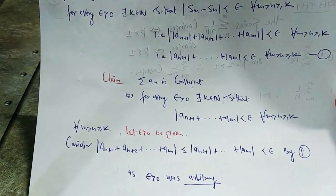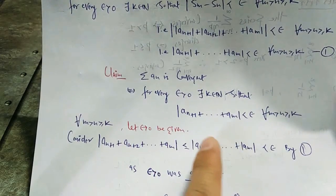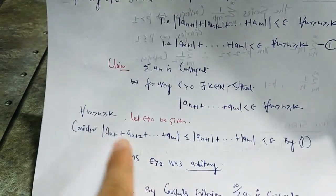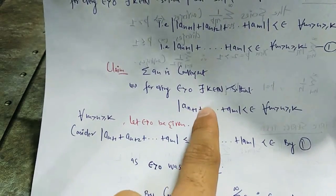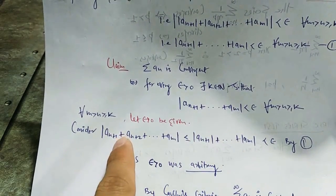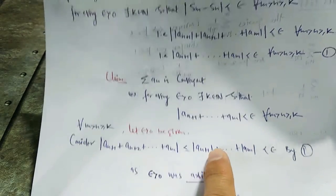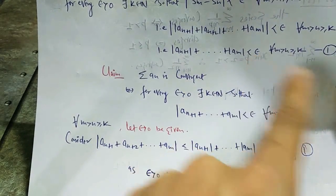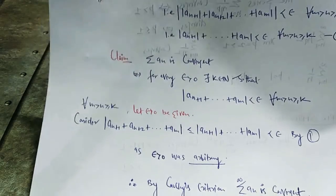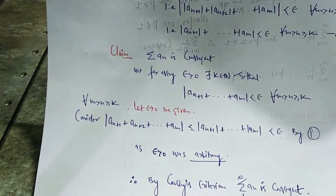To prove 'for all,' we never show it directly — instead we take one arbitrary positive ε. So let ε₀ be any arbitrary given positive, and suppose m > n and n ≥ k. Now consider this expression. By the triangle inequality, |aₙ₊₁ + aₙ₊₂ + ... + aₘ| ≤ |aₙ₊₁| + |aₙ₊₂| + ... + |aₘ|, and this is less than ε using equation 1, since ε > 0 was arbitrary.